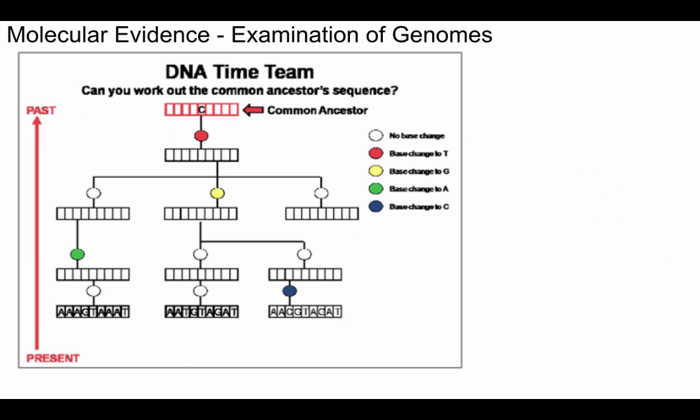Our first piece of evidence is molecular evidence — DNA, RNA, proteins, or amino acid sequences. Focusing on DNA: if we had a common ancestor with a series of A's, T's, C's, and G's, as that organism passes its genes to the next generation there may be slight mutations that occur. Eventually we will have different organisms with different DNA sequences, showing variations within a species.